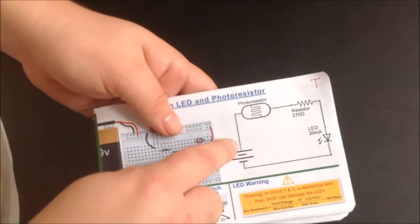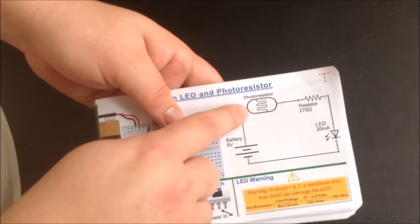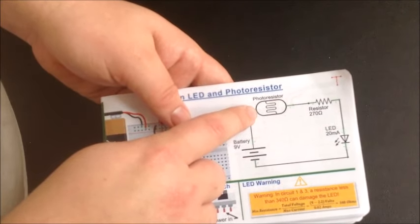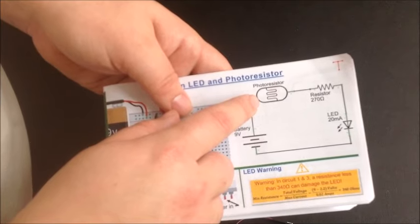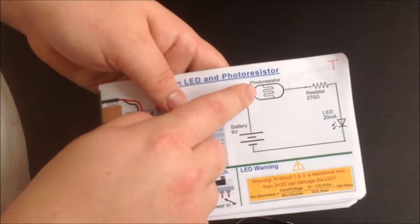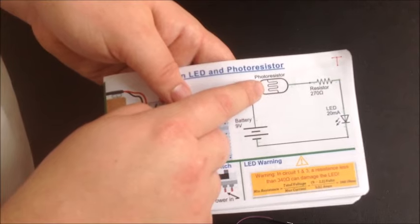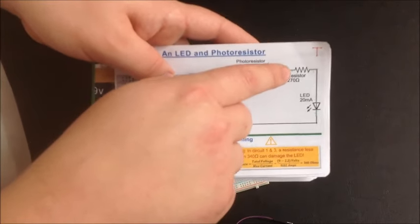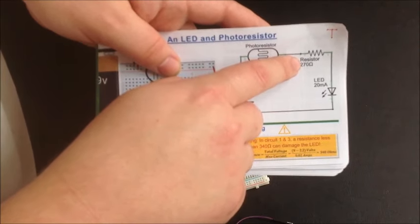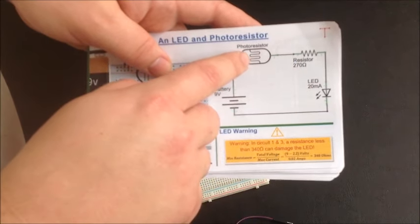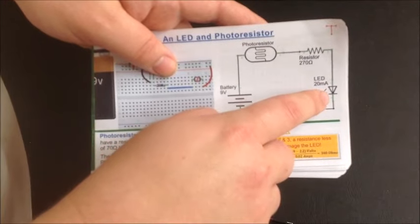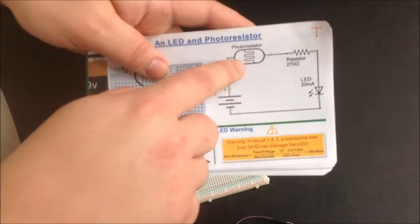Very simple, the photoresistor, depending on how much light comes to it, it has different values for resistance. So lots of light means little resistance, no light means high resistance. Then a resistor so the LED won't burn out, even when there's lots of light, and then the LED. Simple circuit again.